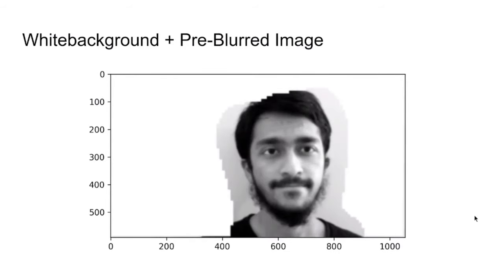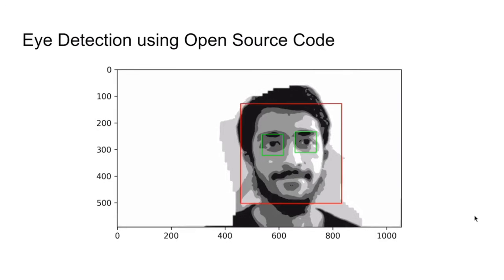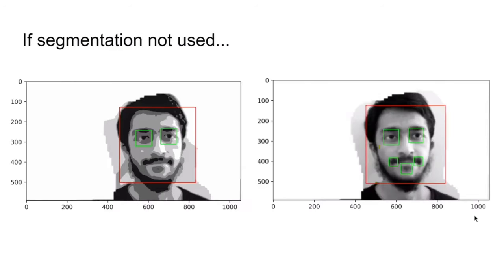Then using that cleaned depth map, we create a white background around it and we add our pre-blurred image in it. Then we add K-min segmentation and, using some open source code, we detect the eyes. It's important to note that if we didn't do the K-min segmentation, the open source code would not be able to detect the eye properly.